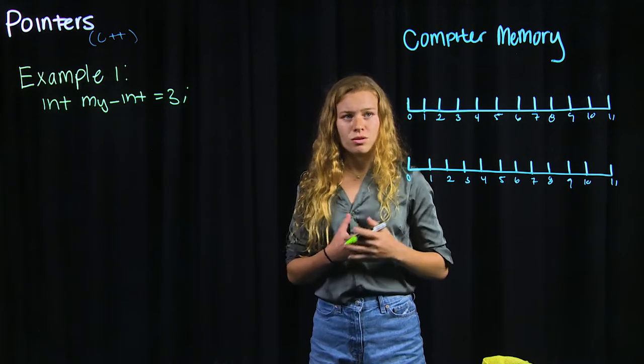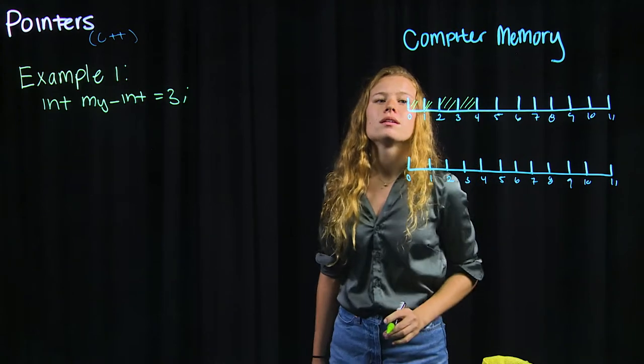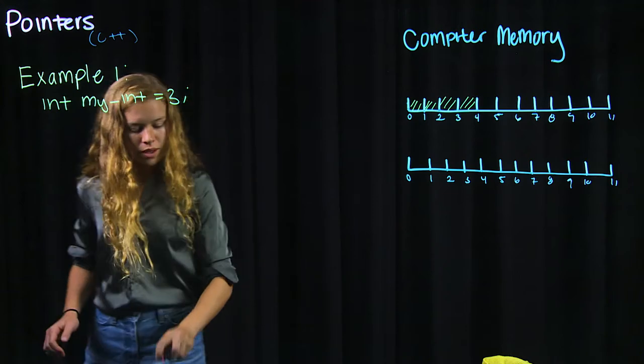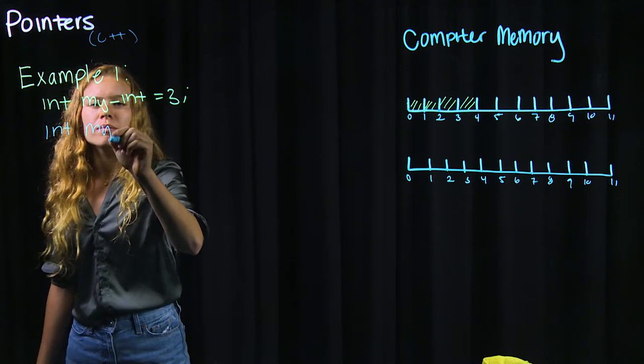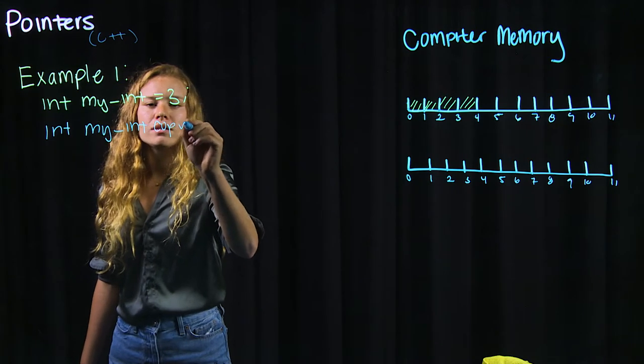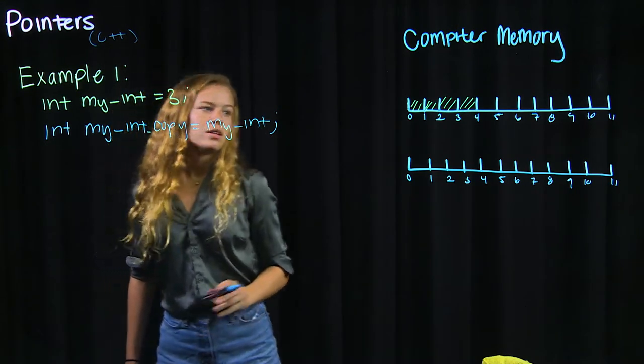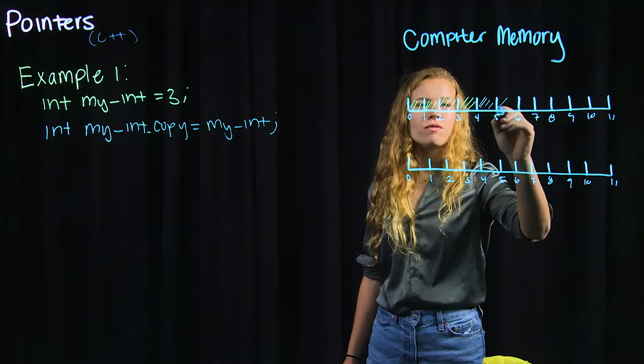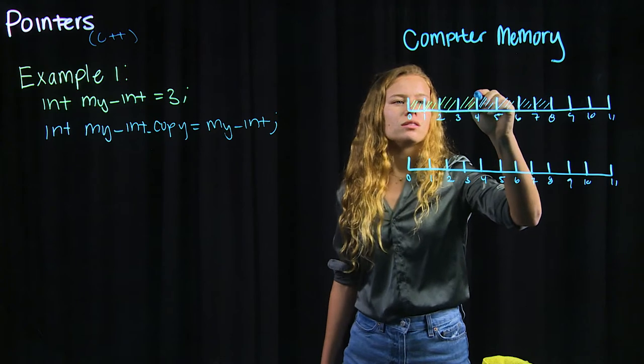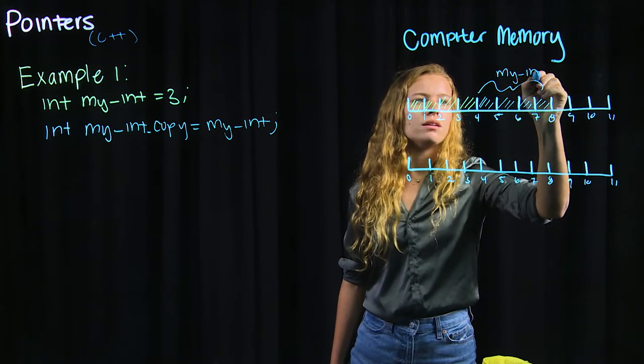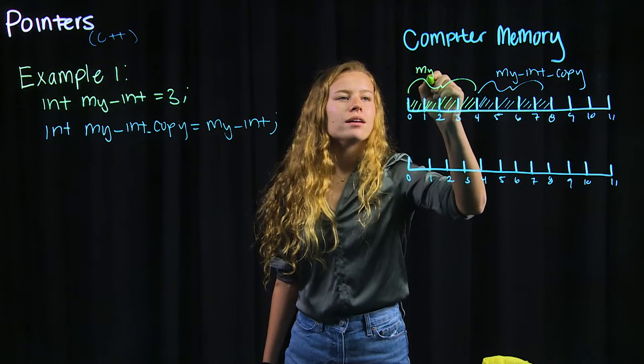So an integer in C++ is stored as 4 bytes in memory. So for this integer it will take up these 4 bytes. And then if we go and we make a copy of this integer, int my_int_copy = my_int. So let's see what this looks like in memory. We'll see that we take up an additional 4 bytes of memory by saving my_int as a copy in my_int_copy. Let's just label these real quick. This is my_int_copy and then this one is my_int.